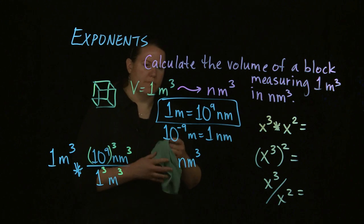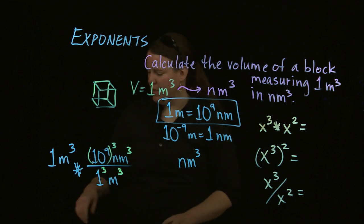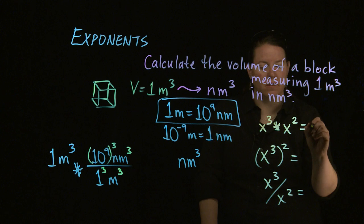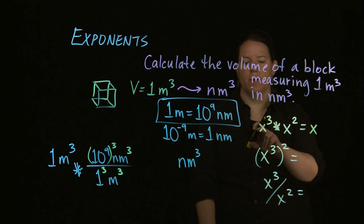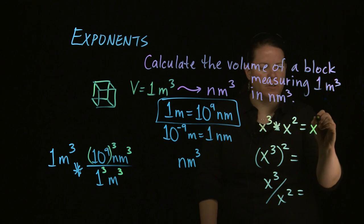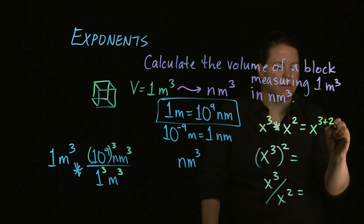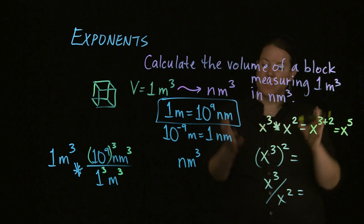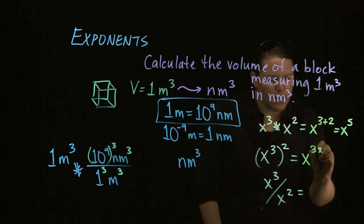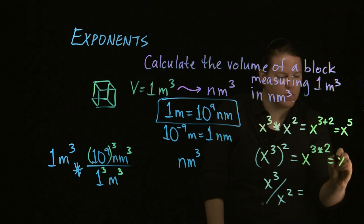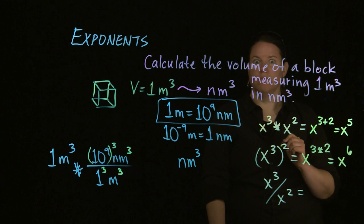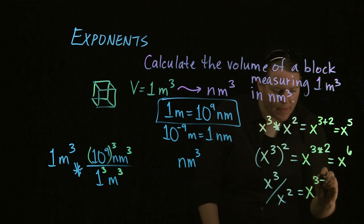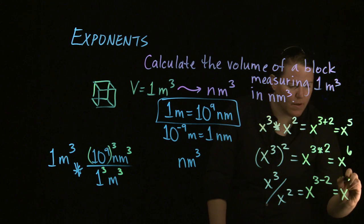What do you do with powers when you have the same base? When you multiply same-base terms, you add the exponents: x cubed times x squared equals x to the three plus two, which is x to the fifth. When you have x cubed and then square that whole thing, you multiply the exponents: x to the three times two equals x to the sixth.